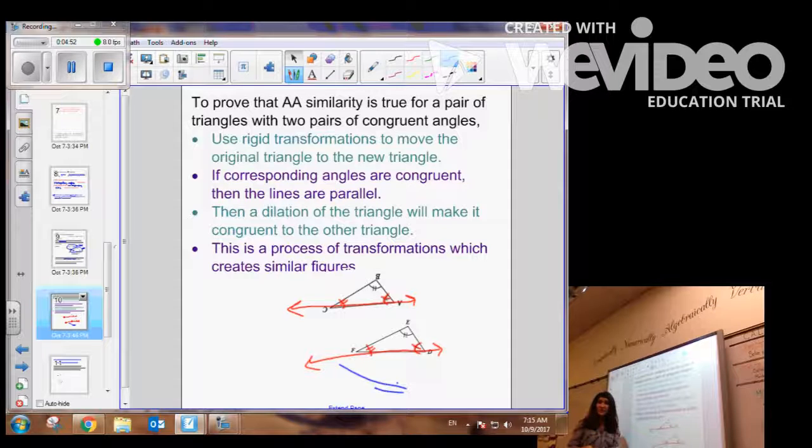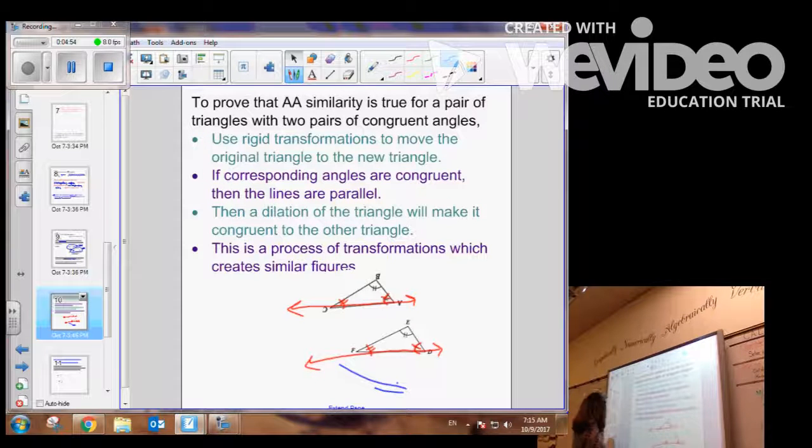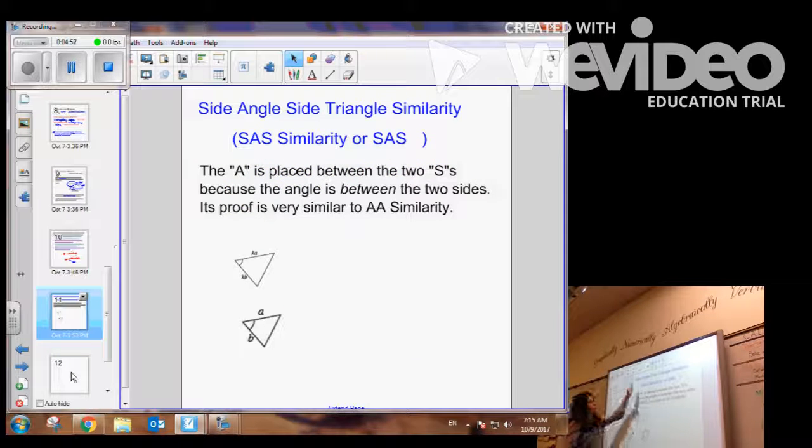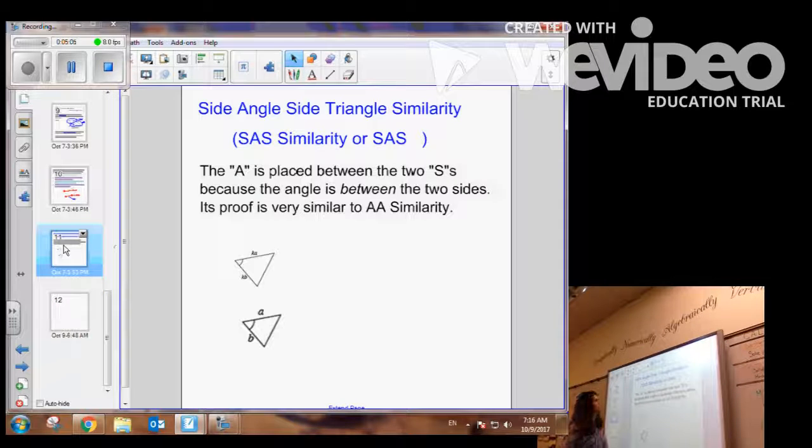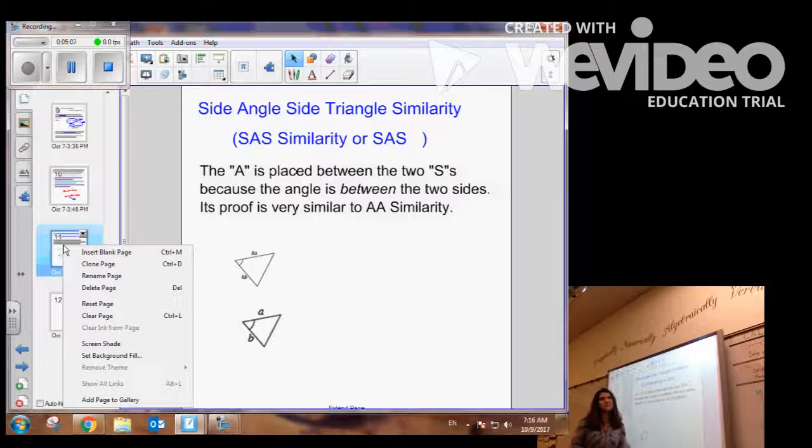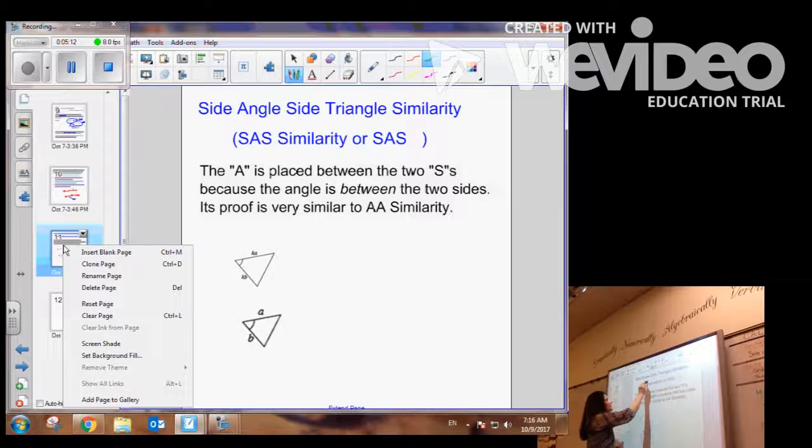Okay, so the second condition that you talked about today was side-angle-side. So, make sure you put this into your math notes. Side-angle-side, triangle-similarity. Now, the important part about this condition for similarity is that the order matters.